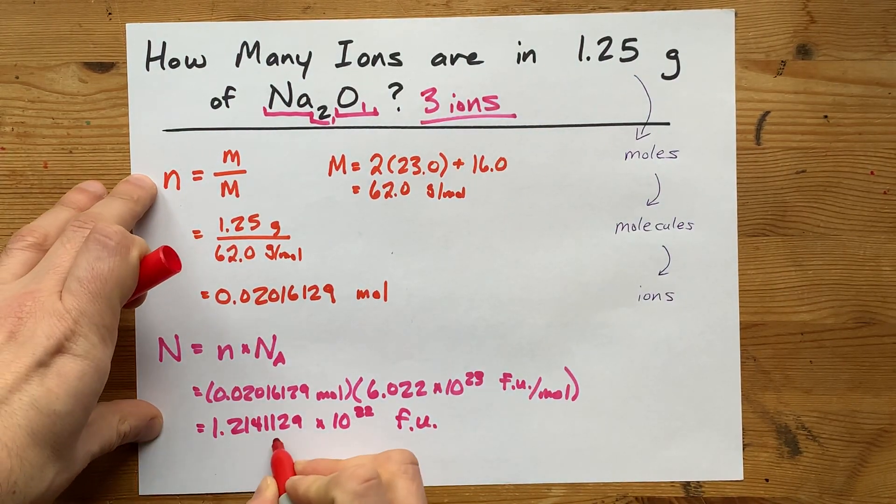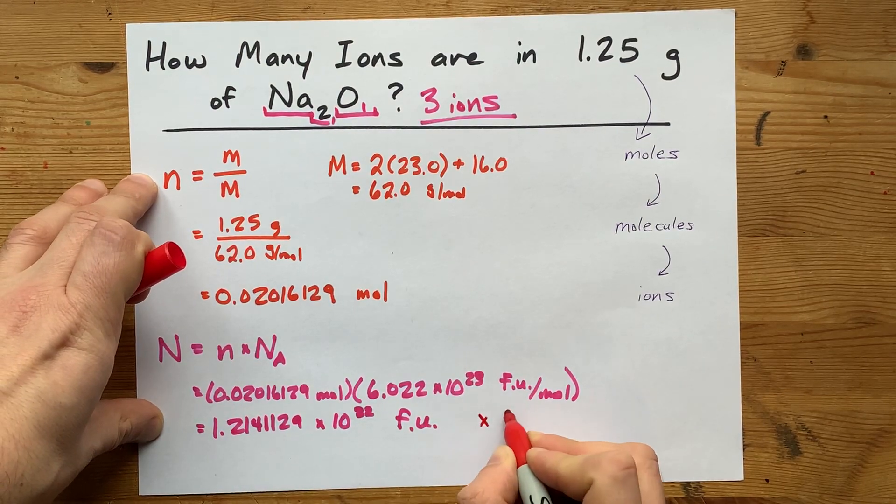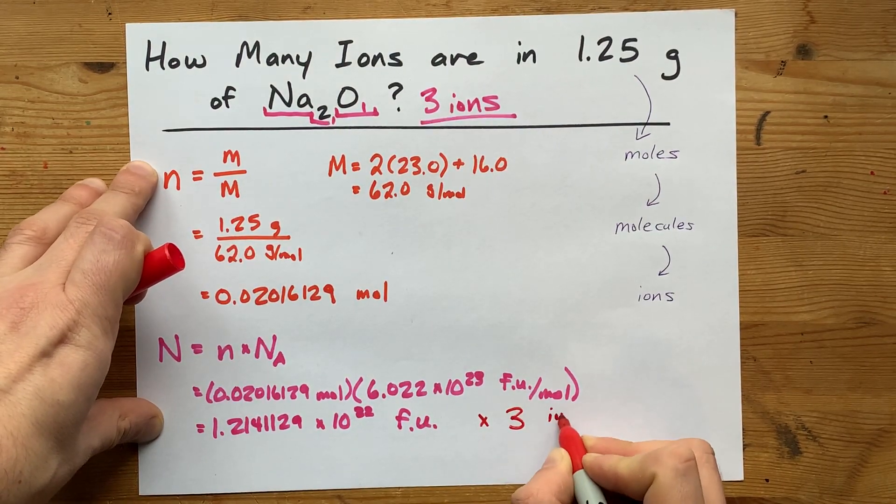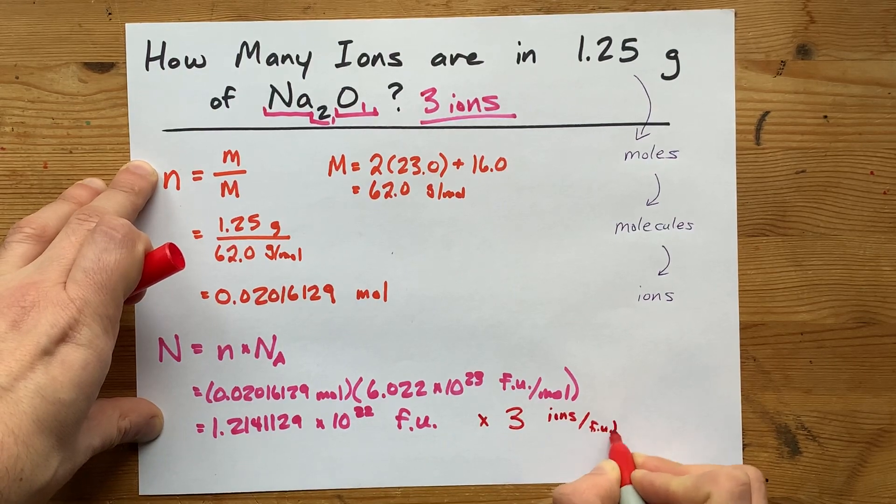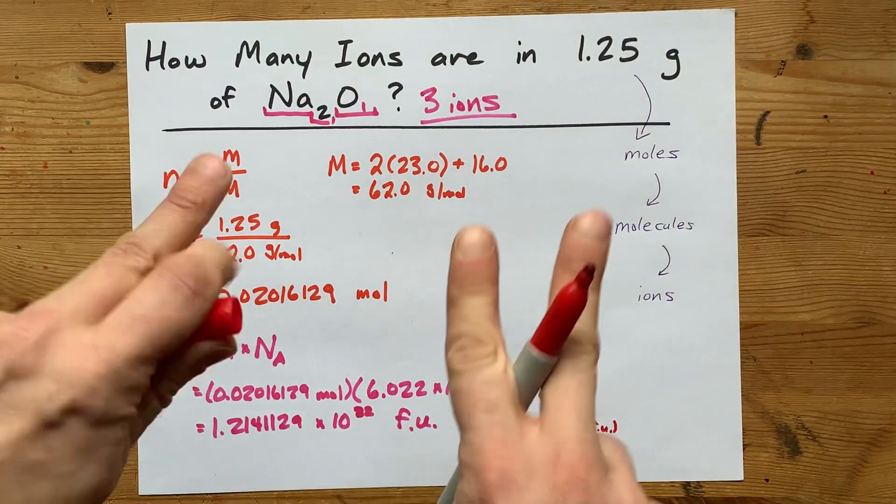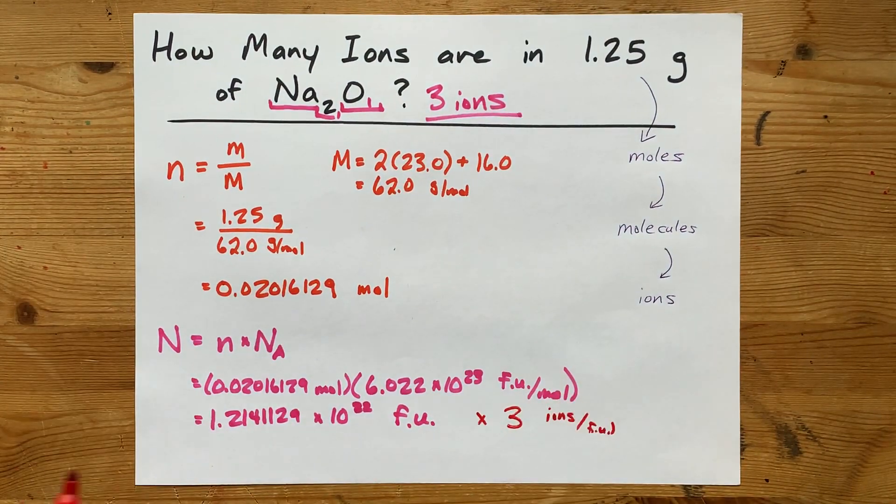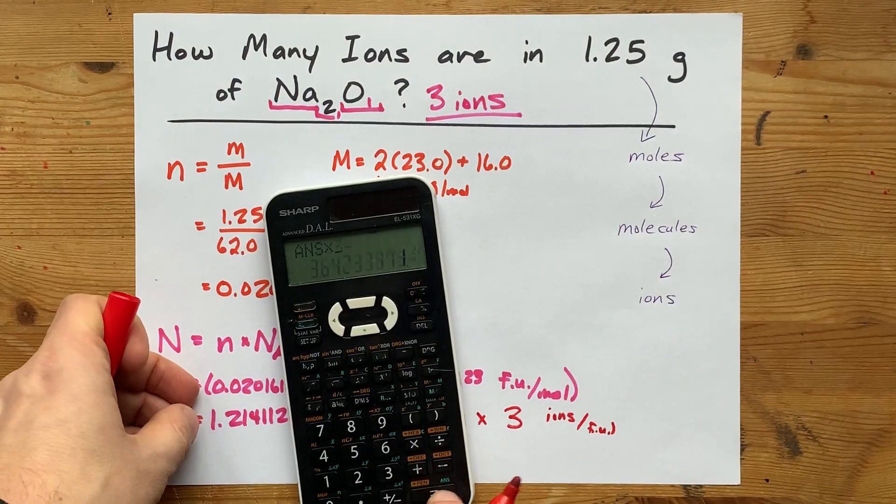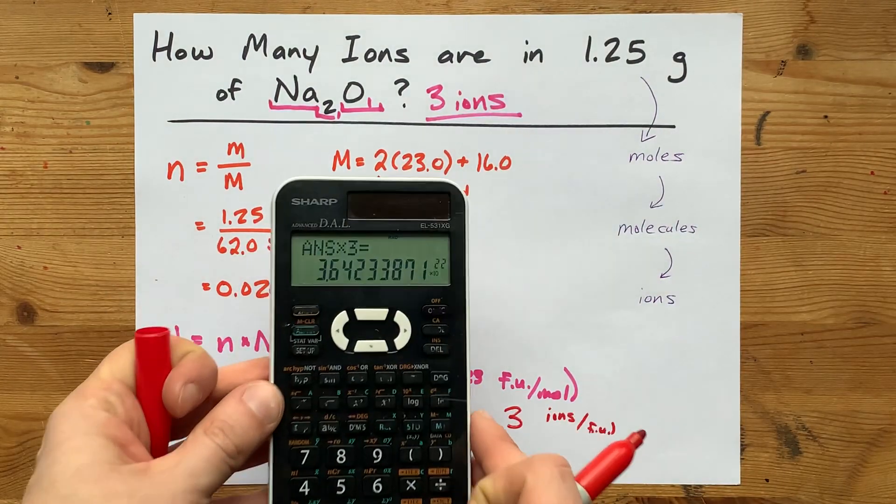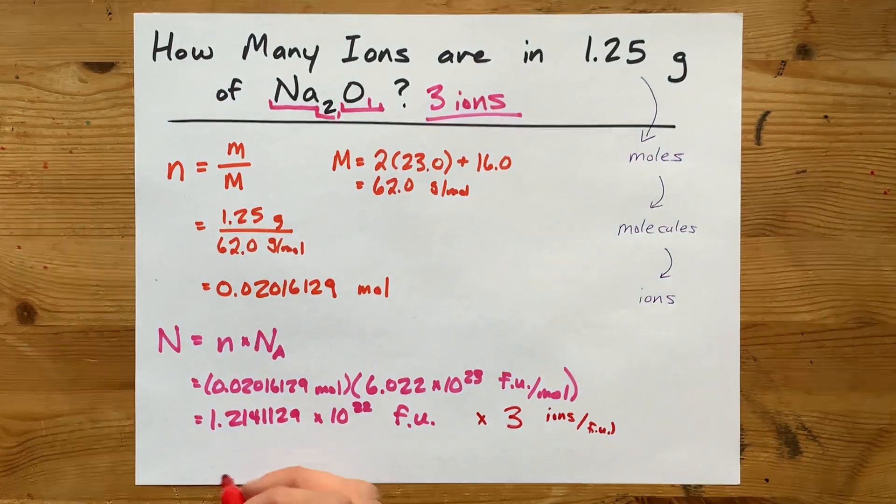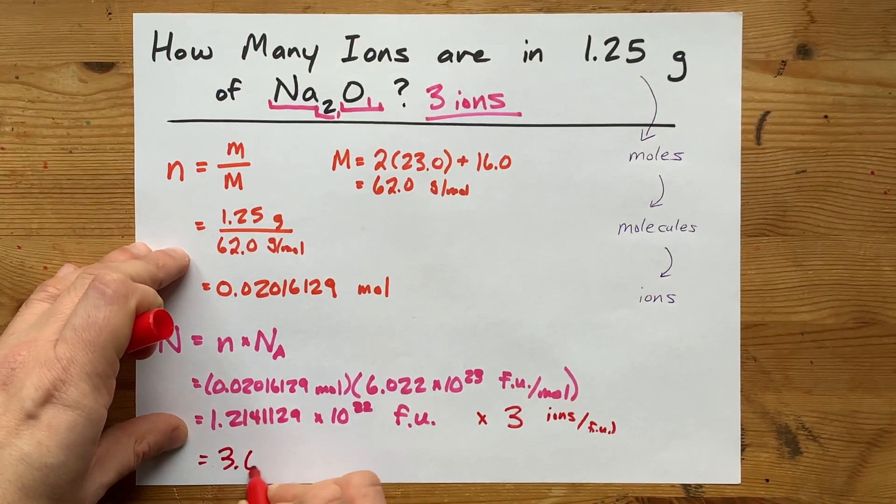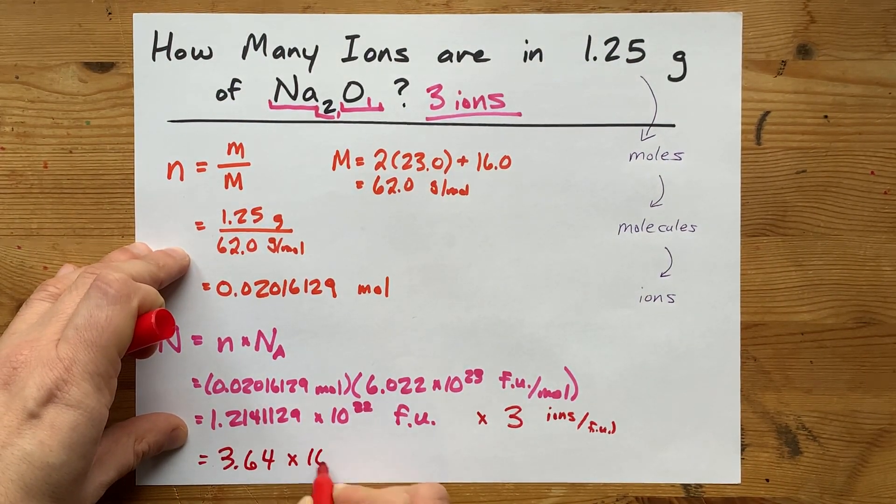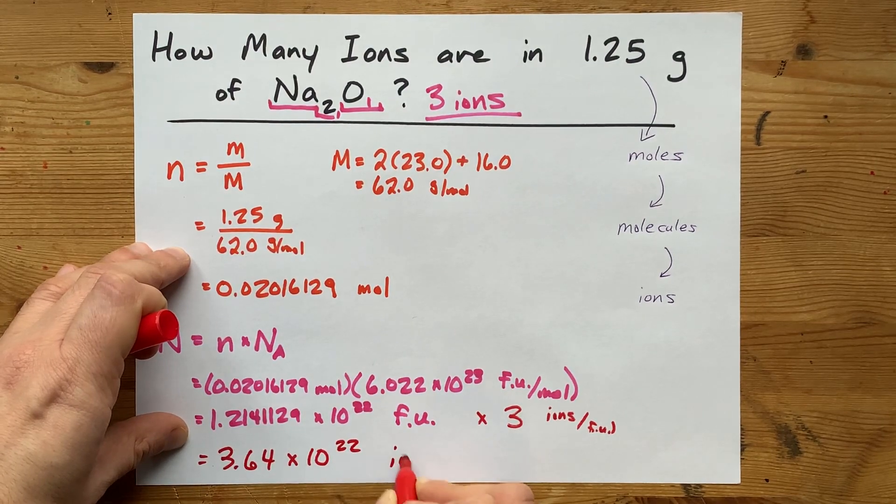So, I'm going to want to take that number and times it by three ions per formula unit. I'm tripling this number of molecules that I have. Times 3 equals 3.64 times 10 to the 22. 3.64 times 10 to the power of 22 ions.